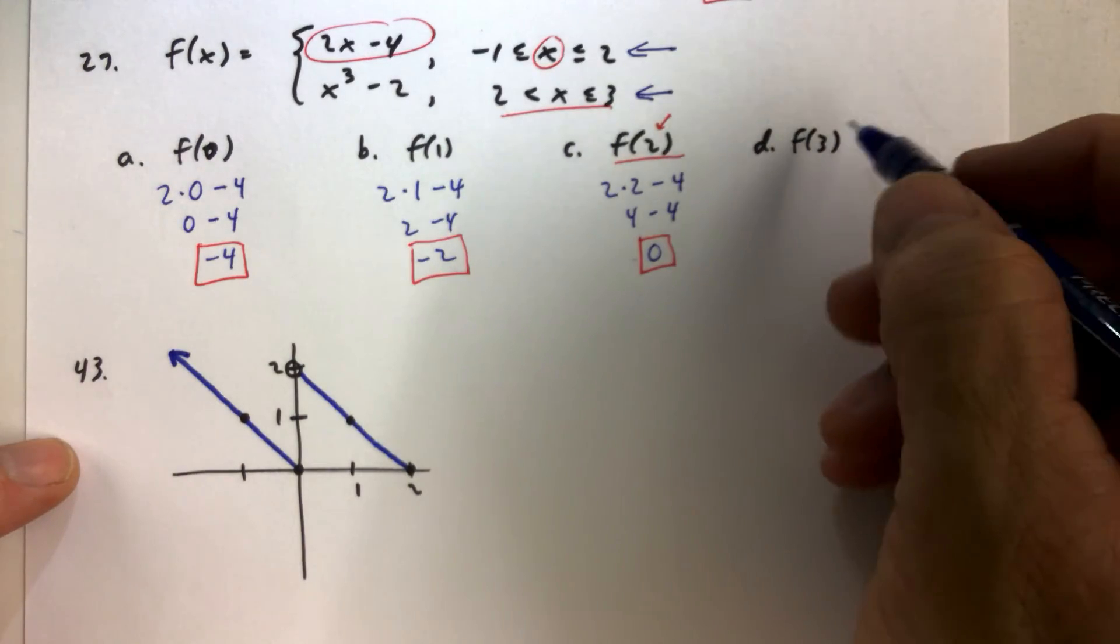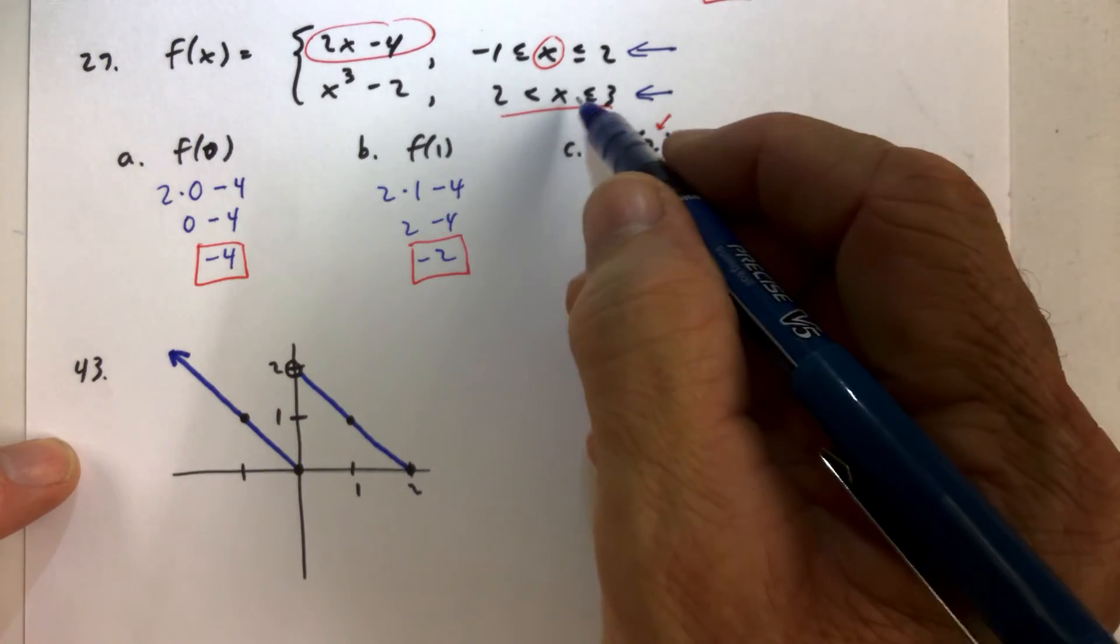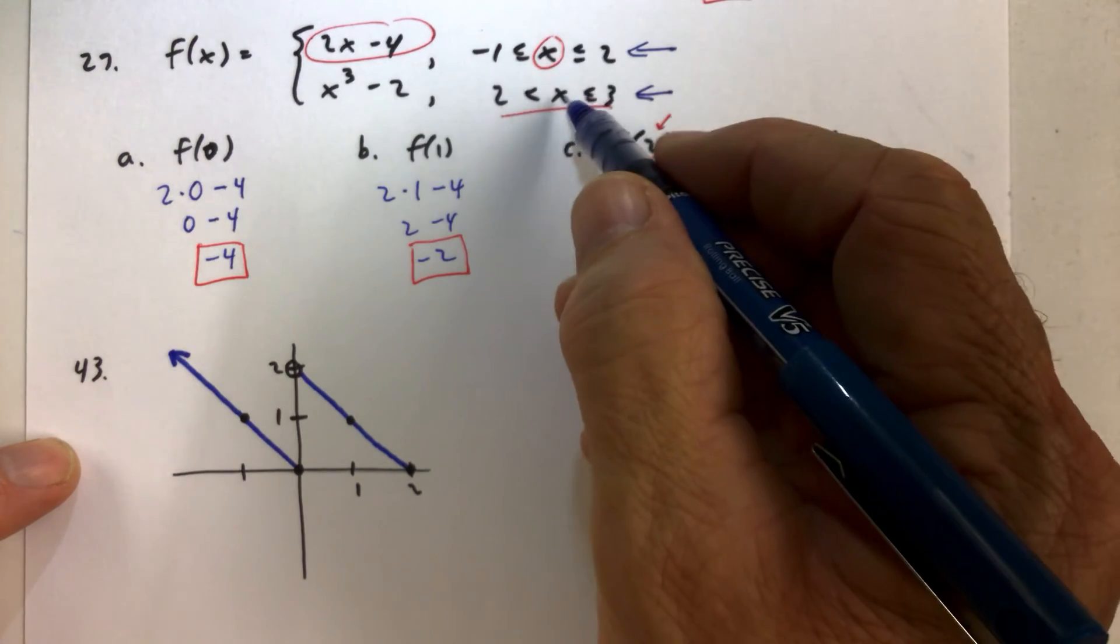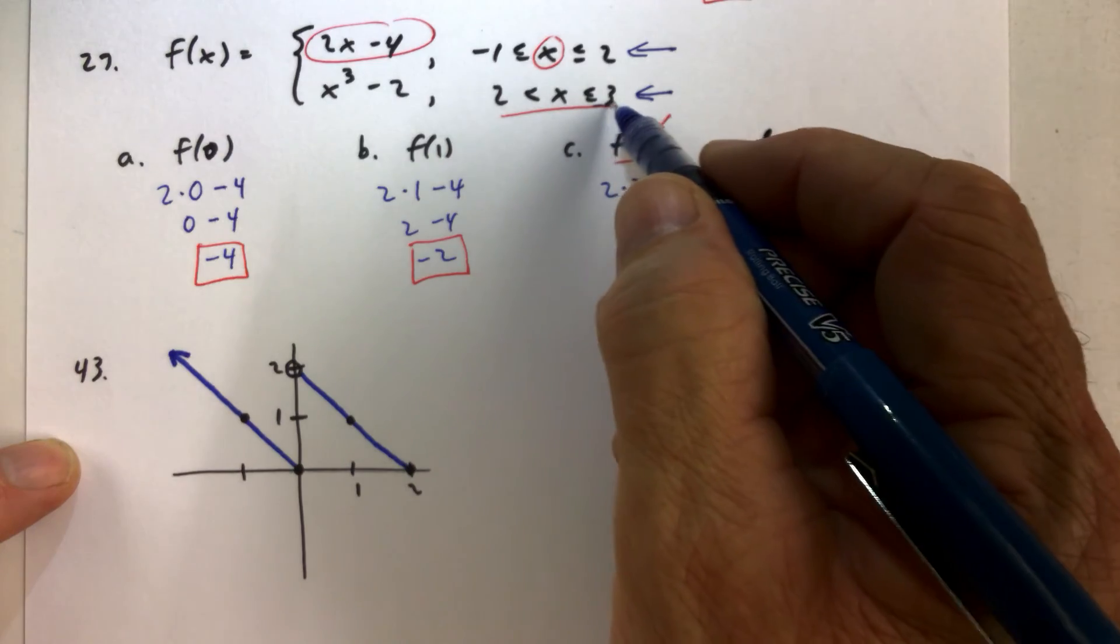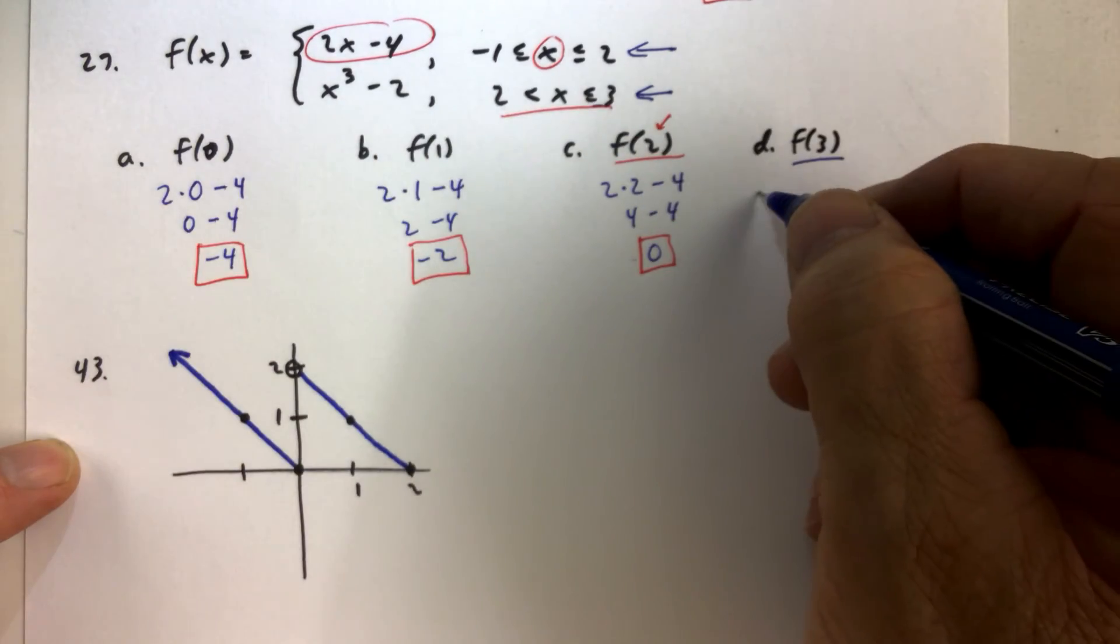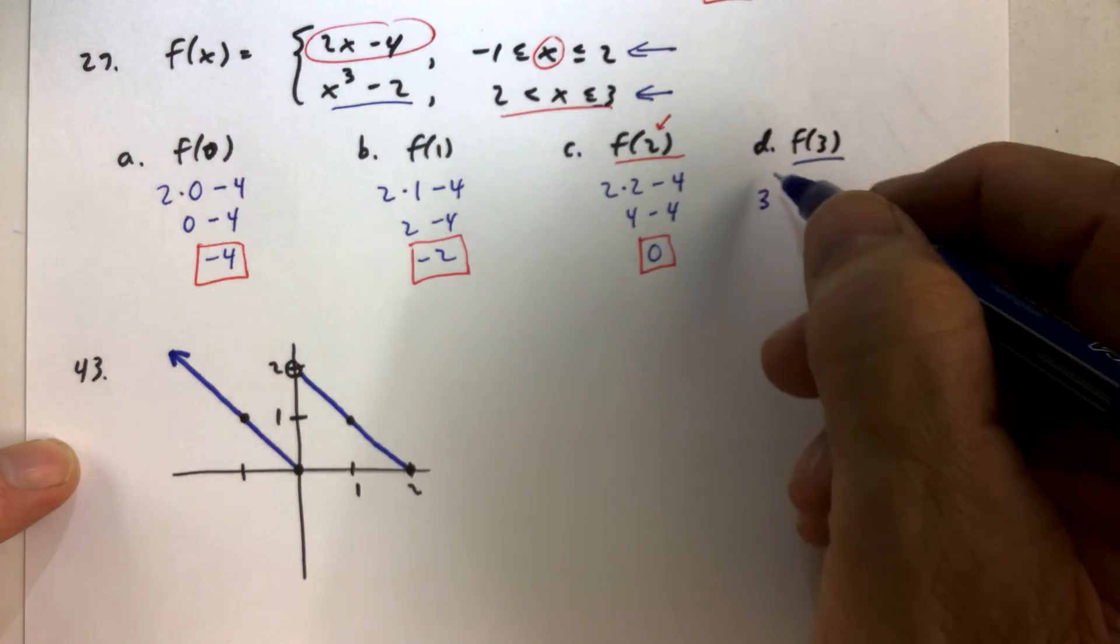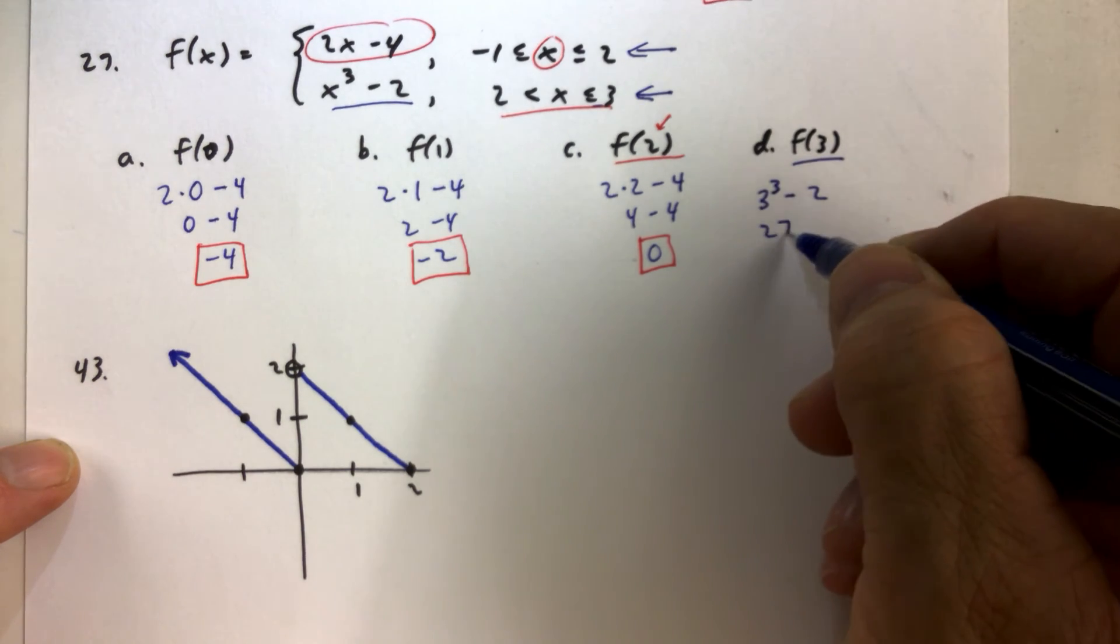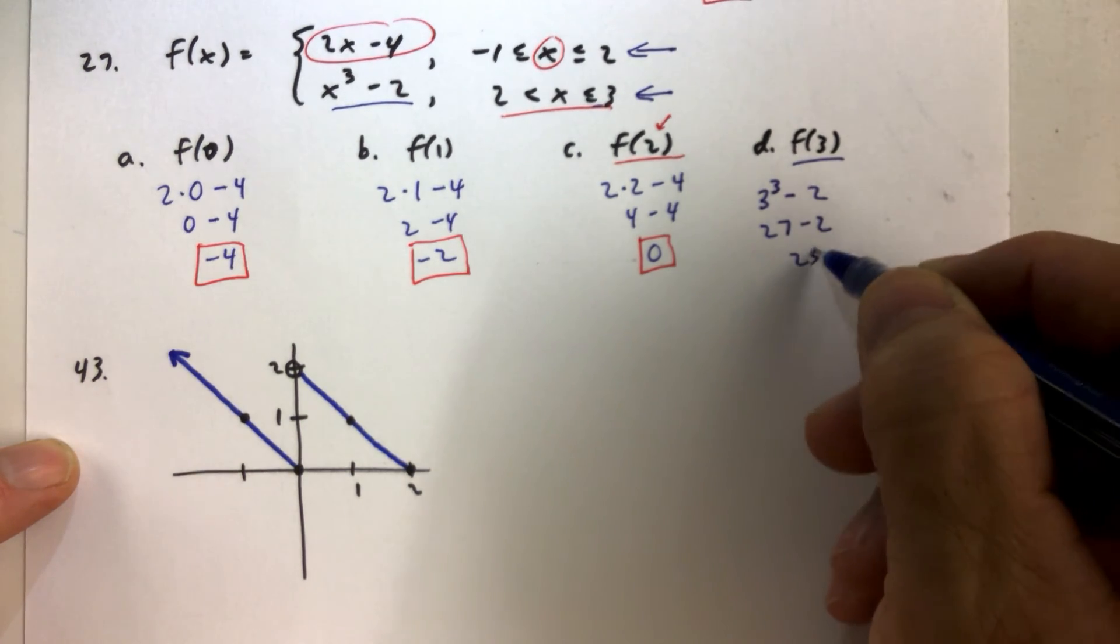Finally, f of 3. Then we would notice that 3 is not in between negative 1 and 2. 3 is between 2 and 3, including 3. So we're going to replace x in the second piece with 3. So we get 3 cubed minus 2. 3 cubed is 27. 27 minus 2 is 25.